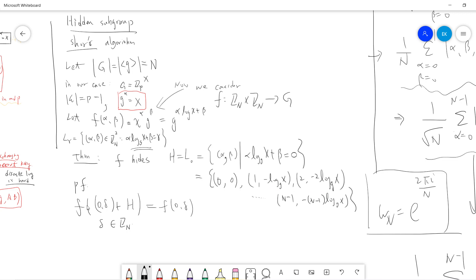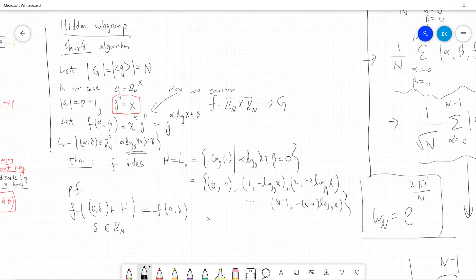The idea is that zero plus delta, zero delta plus h will be this one where delta is in Z_n. So f will hide this l_0. Any element in the same coset will have the same f. The proof is very easy.